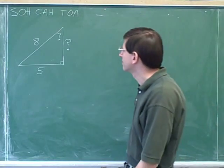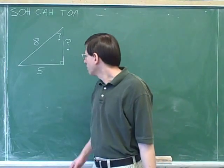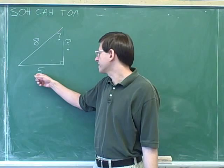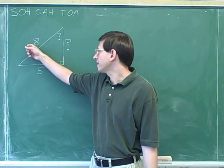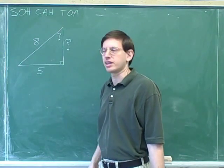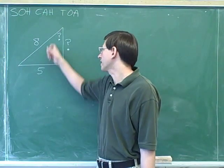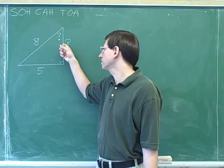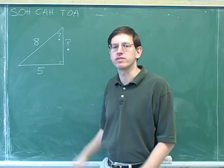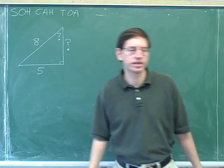Here's our next problem. We have a right triangle where one side has a length of five and another side has a length of eight, and I'd like you to figure out how big is this angle and how long is this side. Please pause the video and give that a shot.